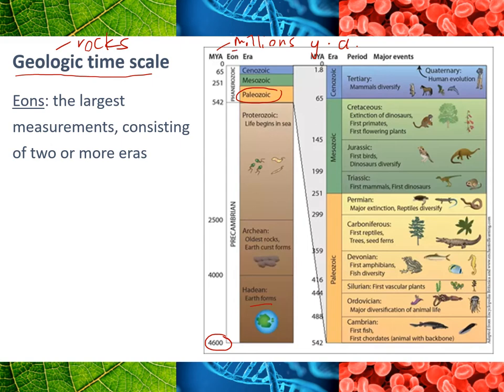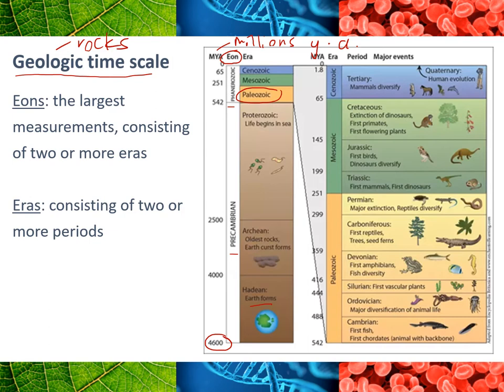Here you'll see this word 'eons.' Eons are the largest measurements of time, and you can see here we've got the Precambrian eon and then this other one up here. You don't need to know the names of those. Then eons — because they're such enormous periods of time — are broken into slightly smaller but still huge periods of time called eras. An era is a period of time and they tend to be based on certain types of rock and when they formed. Again, you don't need to know the names of these.